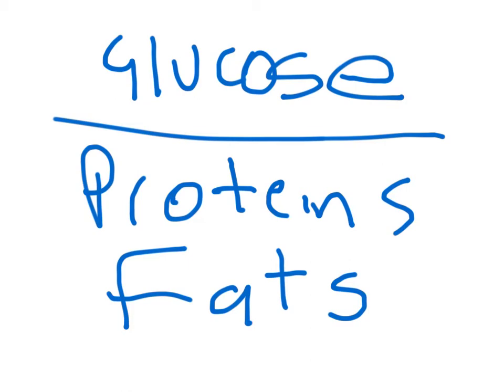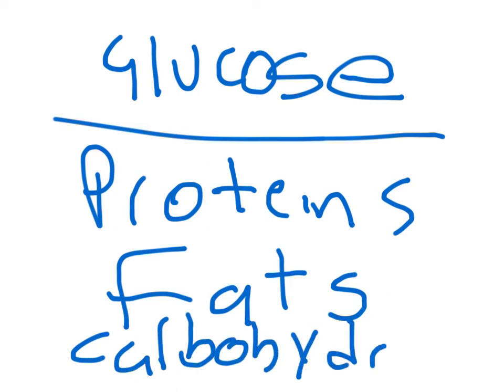Complex carbohydrates and fats are also assembled from monosaccharides and fatty acids respectively. Intermediate compounds from glycolysis and the citric acid cycle can be diverted into fat or carbohydrate building within the cell. These processes are endergonic in that they consume ATP rather than generate it, but they also store energy in chemical bonds created.